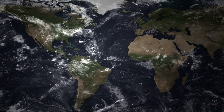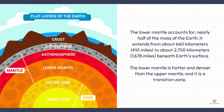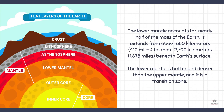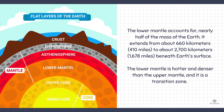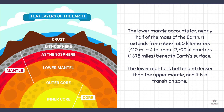Now, let's go back to the layers of the geosphere. We have already discussed the upper mantle region. Next is the lower mantle. The lower mantle accounts for nearly half of the mass of the Earth. It extends from about 660 km to about 2,700 km beneath Earth's surface. The lower mantle is hotter and denser than the upper mantle, and it is a transition zone.